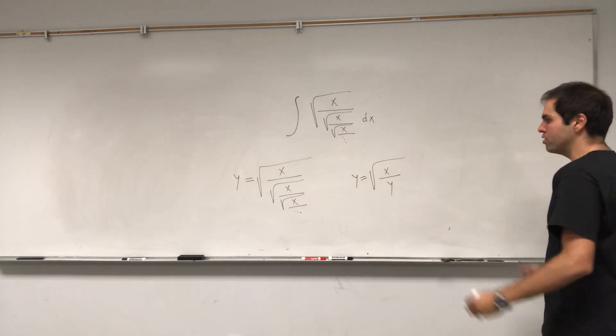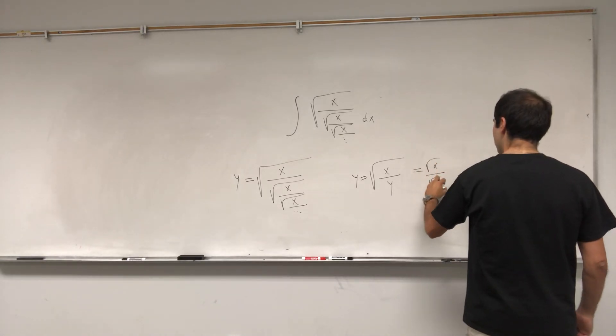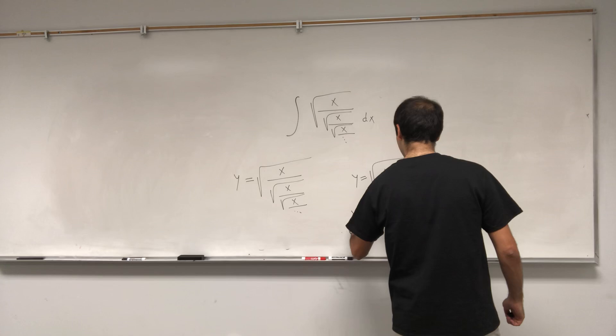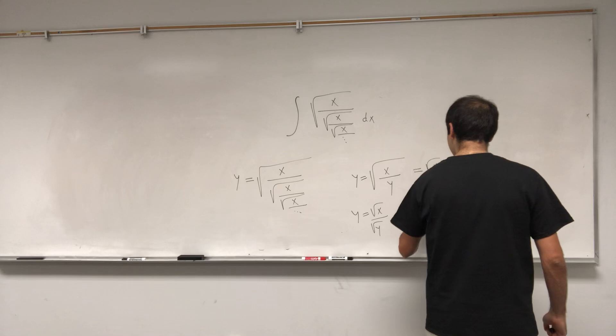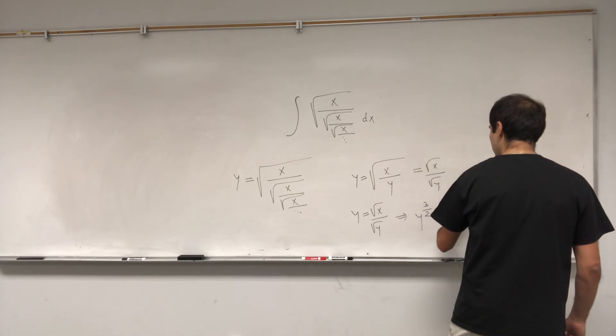And then all you have to do is solve for y. So this is square root of x over square root of y. So y equals square root of x over square root of y. Cross-multiply, you get y to the three halves equals x to the one half.